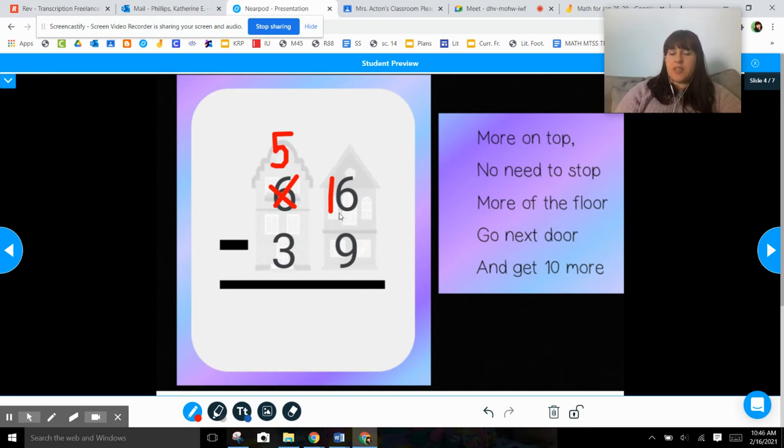Then we can do 16 subtract 9 because before we had 6 subtract 9. You can't take away 9 from 6. You can take away 1, you can take away 2, you can take away 3, 4, 5, and 6. You can even take away 0 if you want to. But you can't take away 9. There's not enough.